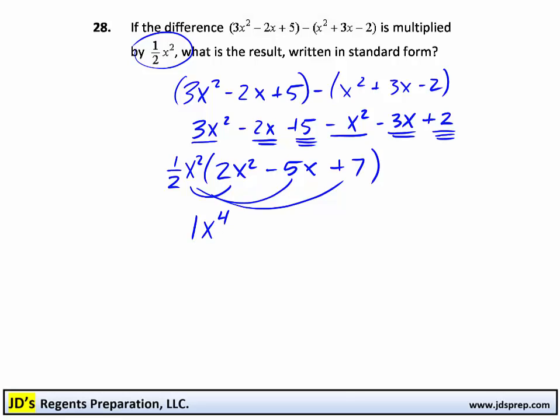If you want to, you could get rid of the 1. It's understood. Multiplying 1 half x squared times minus 5x. 1 half times minus 5 is minus 5 halves. x squared times x is x to the 3rd power. You add the exponents.